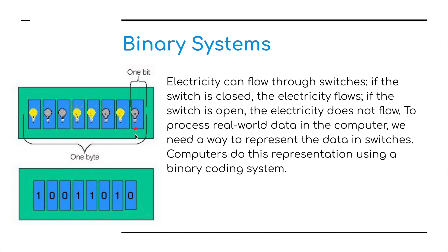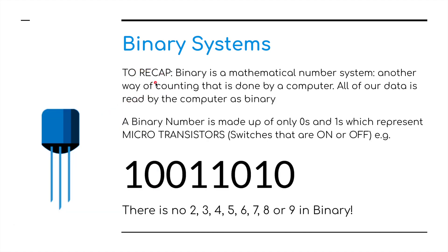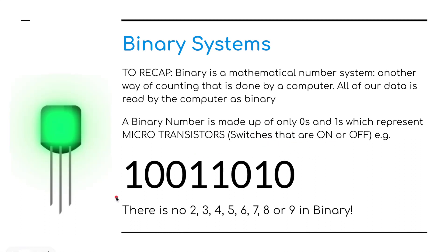If the value is zero, it is off. If the value is one, it is on. To recap: binary is a mathematical number system, another way of counting that is done by a computer. All of our data is read by the computer as binary. A binary number is made up of ones and zeros that represent microtransistors switched on or switched off. There are no twos, no threes, no fours, no fives — all the way up to no nines. Simply ones and zeros.